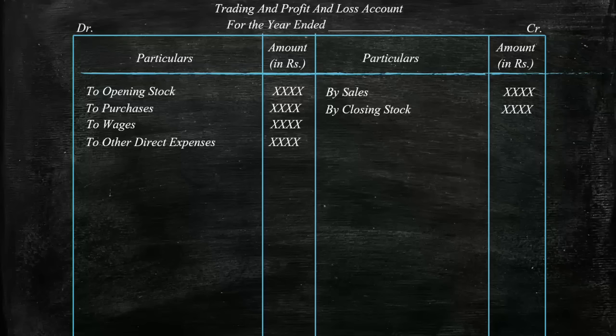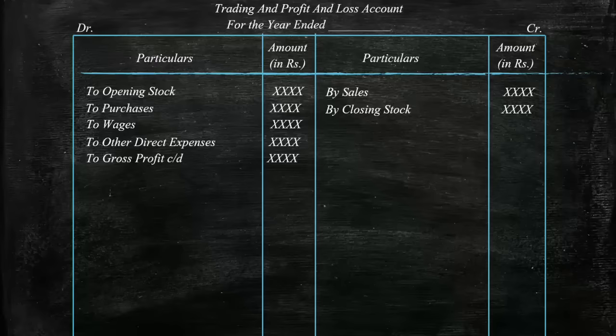This is where our trading account almost ends. The most important part still remains — balancing both the debit and credit sides, as the total of the debit side should always equal the total of the credit side. To balance both sides of the trading account, we use gross profit or gross loss. If the credit side is more than the debit side, we have gross profit. If the debit side is more, we have gross loss. These are the balancing figures.